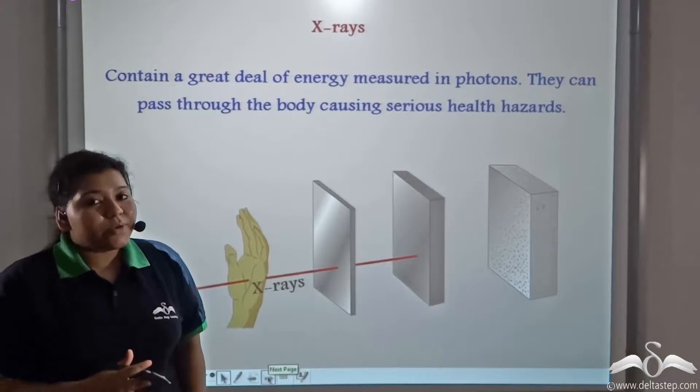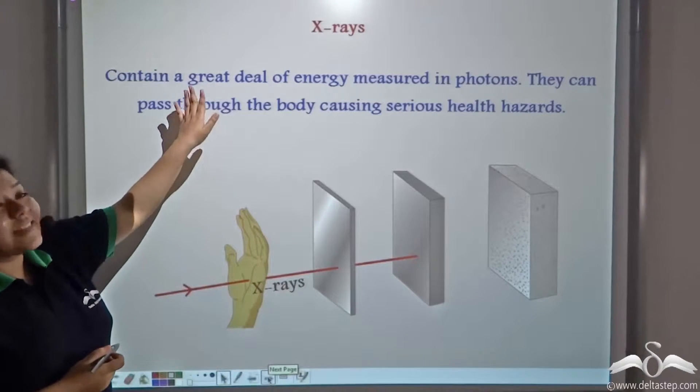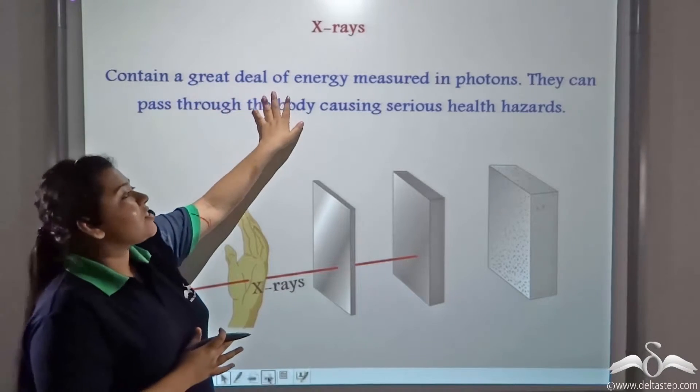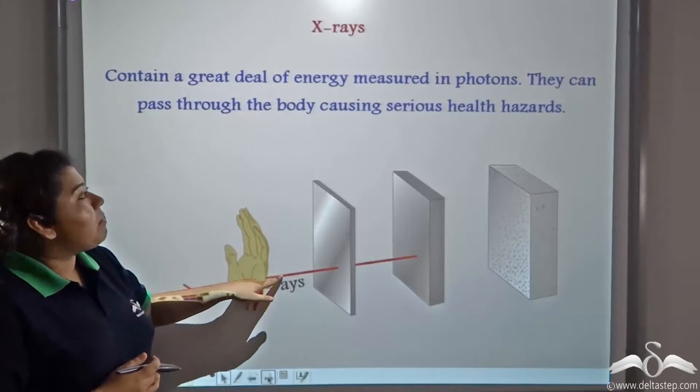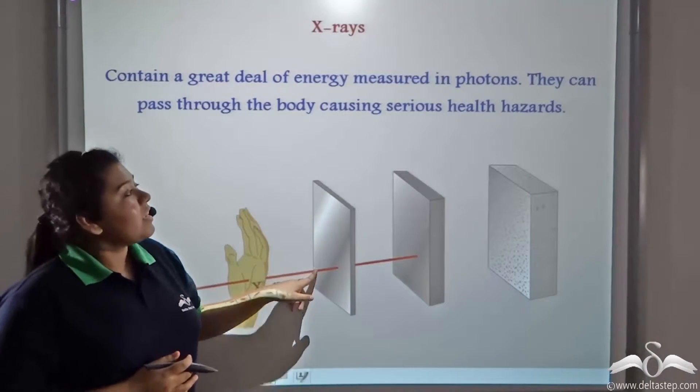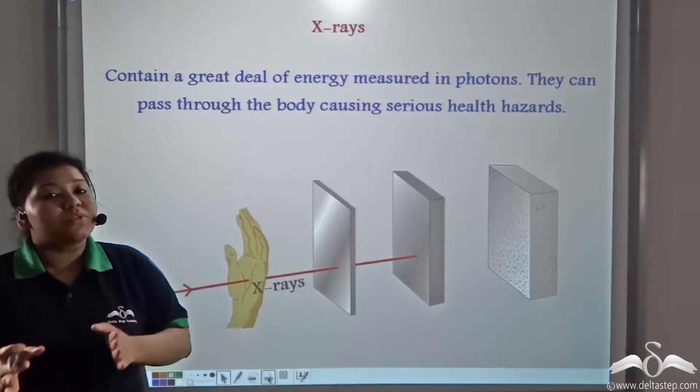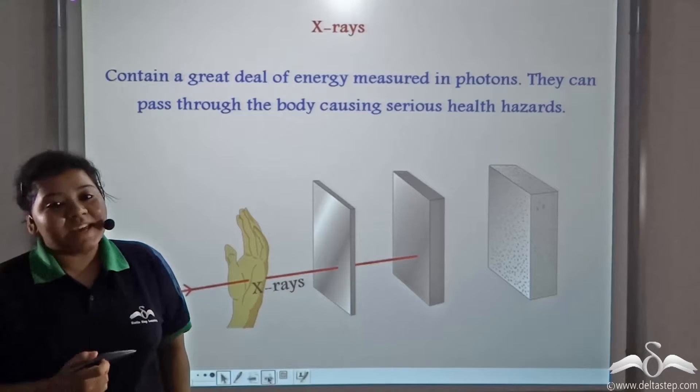Not only this iodine-131, there are other rays such as X-rays that contain a great deal of energy measured in photons. They can easily pass through the body causing serious health hazards such as damaged chromosomes, genetic variations, or bone cancer.